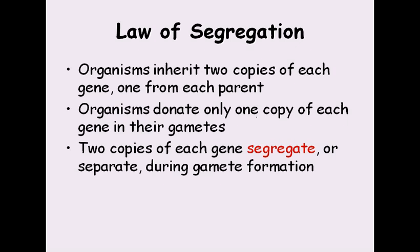The Law of Segregation: if we are talking about heredity and Mendelian inheritance, the two laws given by Mendel are very important. The first is the Law of Segregation, and the second is the Law of Independent Assortment. The Law of Segregation suggests that organisms inherit two copies of each gene — one from each parent. For one particular trait, for example height, two alleles are present, each coming from one parent.